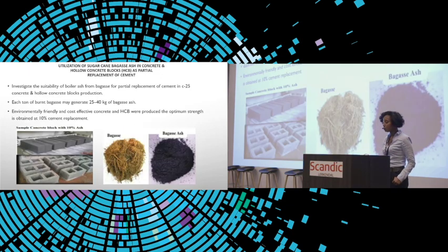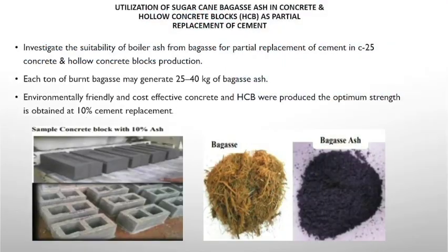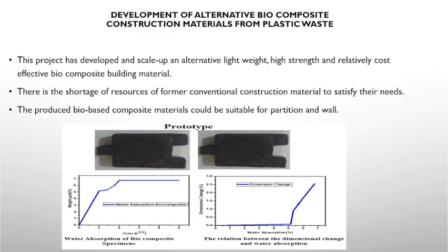This one is also using the bagasse ash that's produced in the sugar industries for production of these cement blocks for construction. The construction material cost is much higher, so we are trying to replace the cement by this bagasse ash. So the blocks are already starting to produce. This one is almost similar to the prototype that's produced from plastic wastes. So we try to convert the wastes that we have in the industries in different forms to be used as partition board. This is for partition board purpose.